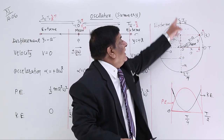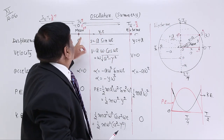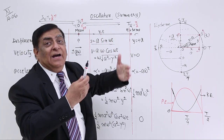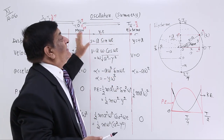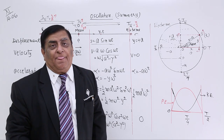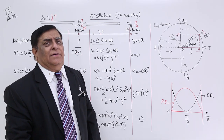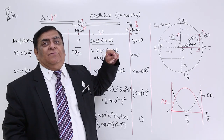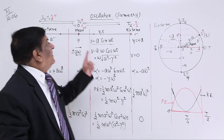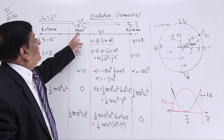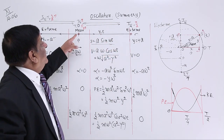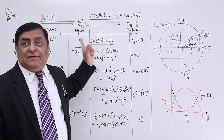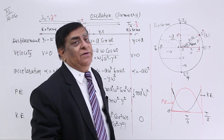As P keeps oscillating, its phase continuously adds up — 2π, 4π, 6π, 8π, and so on. The phase keeps accumulating with each complete oscillation.